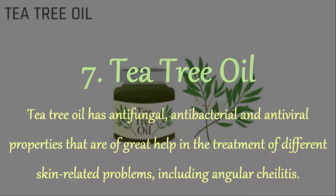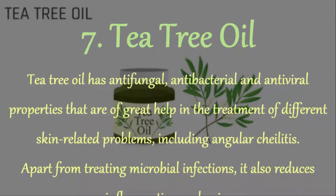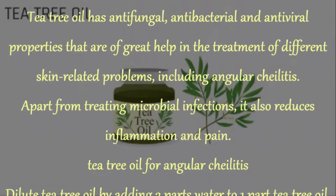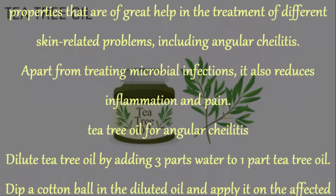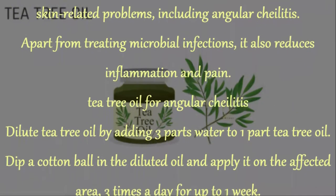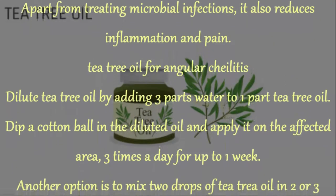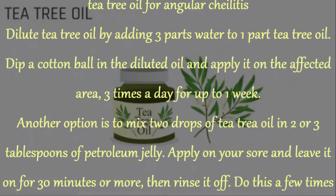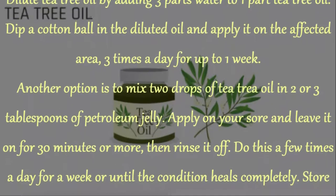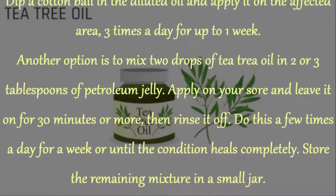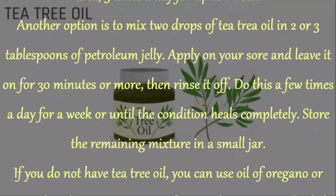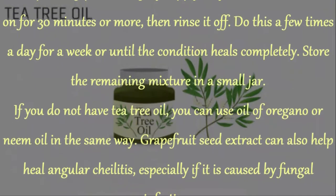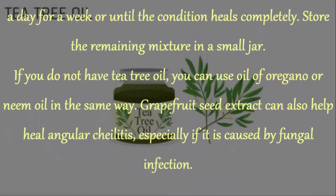7. Tea Tree Oil. Tea tree oil has antifungal, antibacterial, and antiviral properties that are of great help in treating different skin-related problems, including angular cheilitis. Apart from treating microbial infections, it also reduces inflammation and pain. Dilute tea tree oil by adding 3 parts water to 1 part tea tree oil. Dip a cotton ball in the diluted oil and apply it on the affected area 3 times a day for up to 1 week. Another option is to mix 2 drops of tea tree oil in 2 or 3 tablespoons of petroleum jelly, apply on the sore, leave on for 30 minutes or more, then rinse off. You can also use oil of oregano or neem oil in the same way. Grapefruit seed extract can also help, especially if caused by fungal infection.